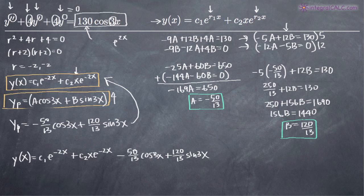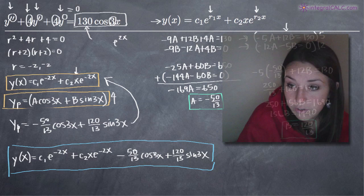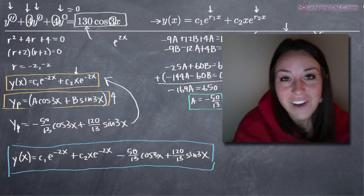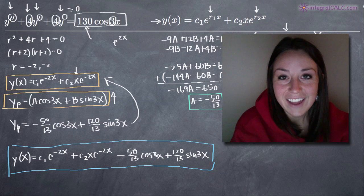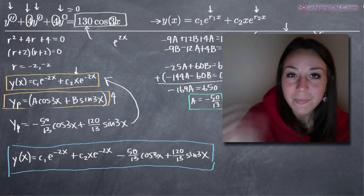The final answer is the general solution plus the particular solution: y of x equals c sub 1 e to the negative 2x plus c sub 2 x e to the negative 2x, minus 50 over 13 cosine of 3x plus 120 over 13 sine of 3x. This is your complete answer for the second order non-homogeneous differential equation. I hope this video helped — see you in the next one!